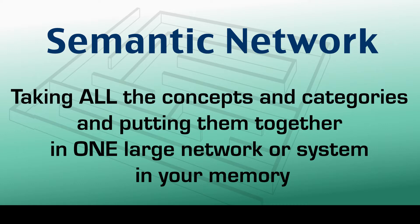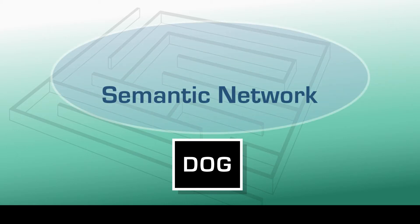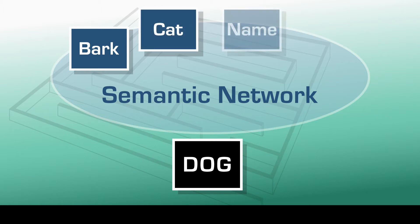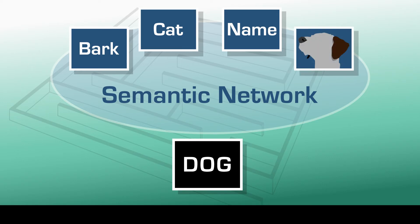For example, if I ask you about the concept of dog, that might automatically activate or get you to think about related concepts such as bark or cat. You might think about the name of your own dog, or you might create a mental image of a dog. By using that one word 'dog,' I have activated all of those related concepts — and that is your semantic network: the organization and activation of all of those ideas or concepts in your memory.